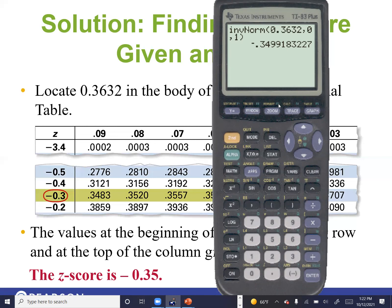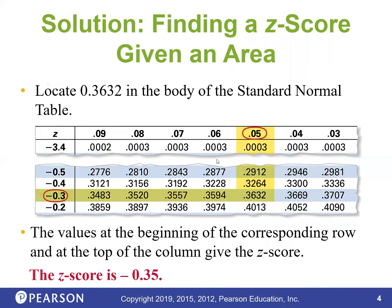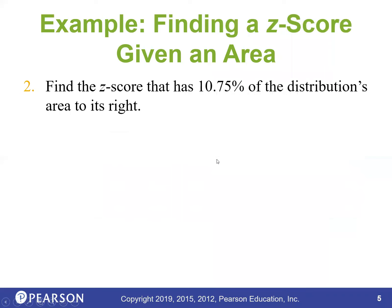Problem 2: Find the Z-score corresponding to 10.7% of the distribution's area to the right. Our problem is that our table and calculator only give cumulative area to the left. So we subtract from 1: 1 − 0.1075 = 0.8925. Now find the Z-score corresponding to a cumulative area of 0.8925.